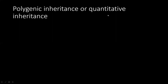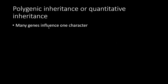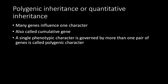Polygenic inheritance, also called quantitative inheritance, involves many genes influencing one character. Polygenes means many genes influence one character. A single phenotypic character governed by more than one pair of genes is called a polygenic character.